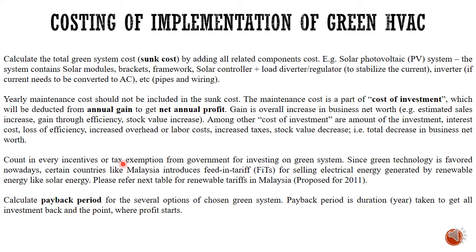By knowing all this, you can actually calculate your payback period for several alternatives of your green system. For example, you have System A, System B, and System C, and you have to calculate your payback period. The system which has the shortest payback period will be chosen as the installed system. The payback period is the duration or years taken to get all your investment money back. For example, if the payback period is 6 years, then after 6 years — say 6.1 — you will start collecting profit.